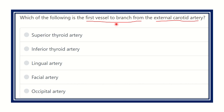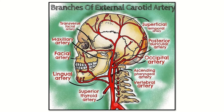Let's first look at the external carotid artery and its branches, and then identify the first branch. Here we can see the common carotid artery, which divides into the external carotid artery and the internal carotid artery.